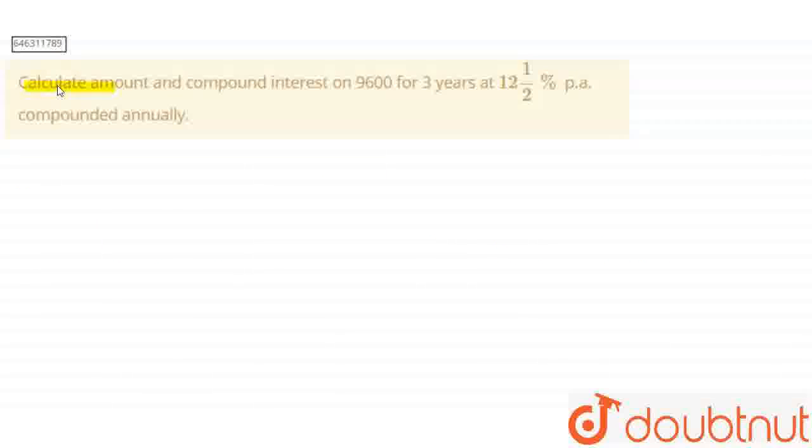Calculate the amount and compound interest on 9600 for 3 years at 12.5% per annum compounded annually. We know the formula for amount is A = P(1 + R/100)^N.